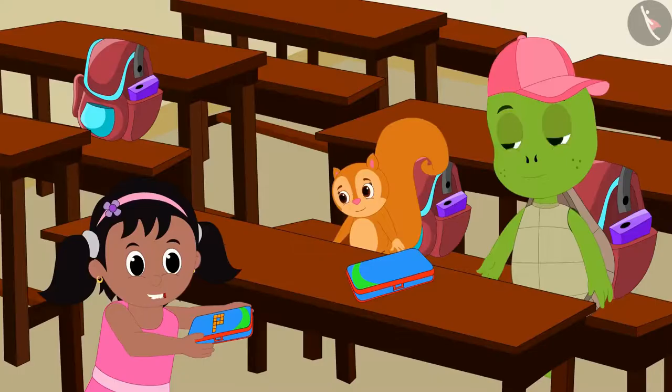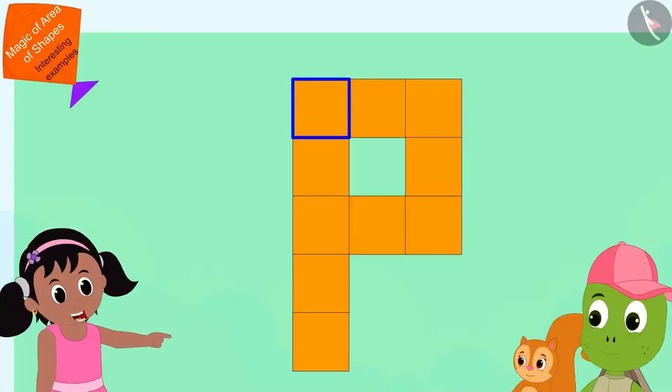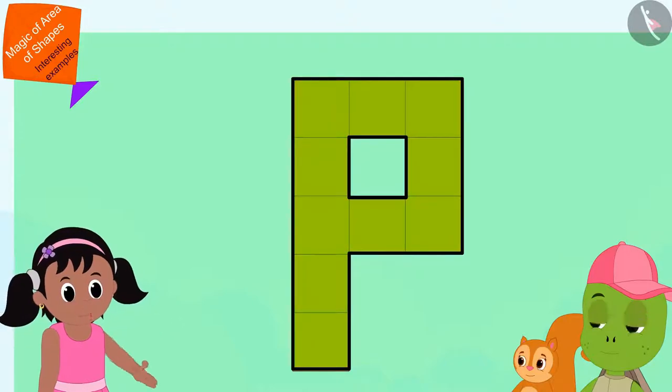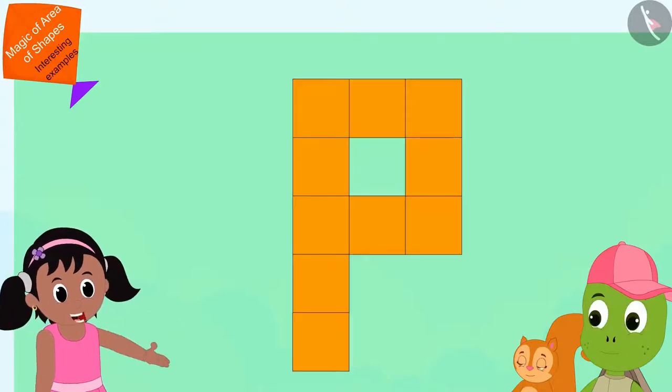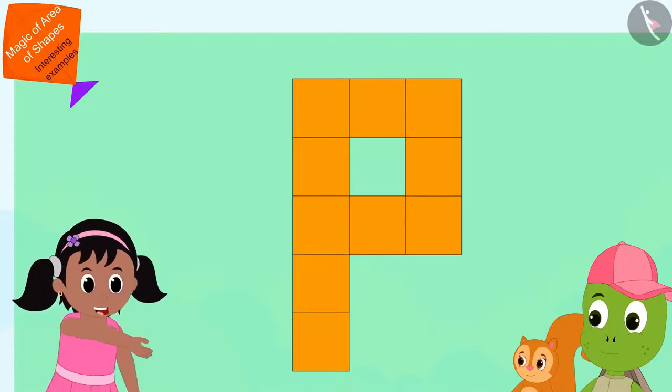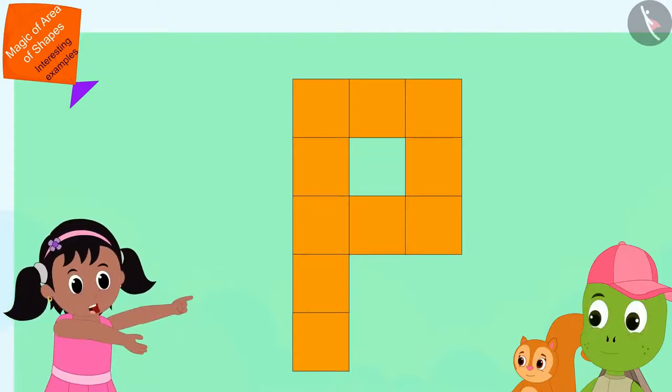I've used these square-shaped stickers on my compass box to make my name letter P. This allows me to easily identify my compass box. Why don't you both use these stickers to draw the letters of your name on your compass box?